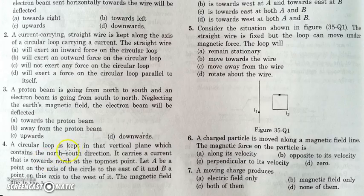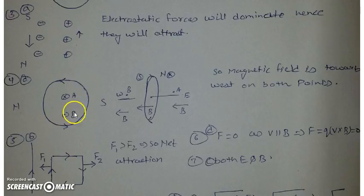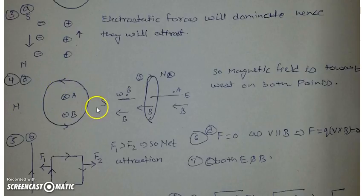In the next question, there is a circular loop in a vertical plane containing north and south direction. It carries a current towards the north at the topmost point. There is a point A on the axis of the circle on the east side and point B on the west side. We have to find the magnetic field at these points due to the loop. At the topmost point the current is towards north, and at the bottommost point it is in the opposite direction.